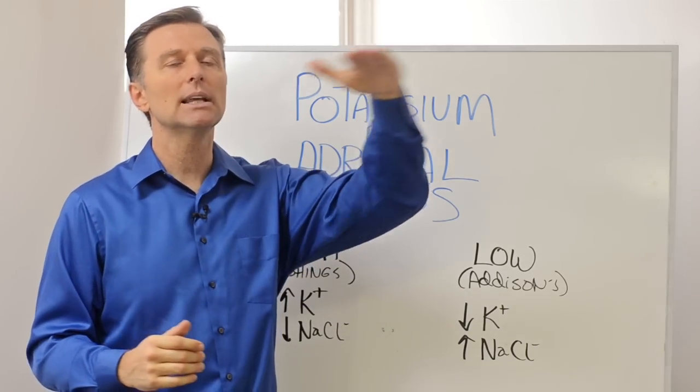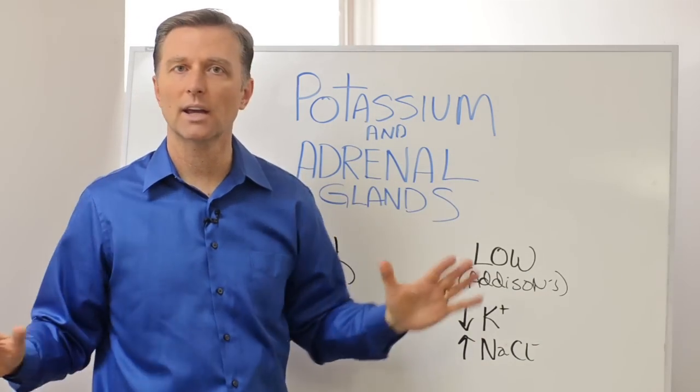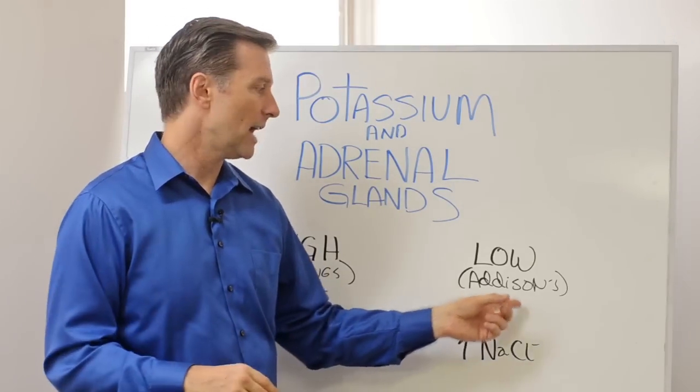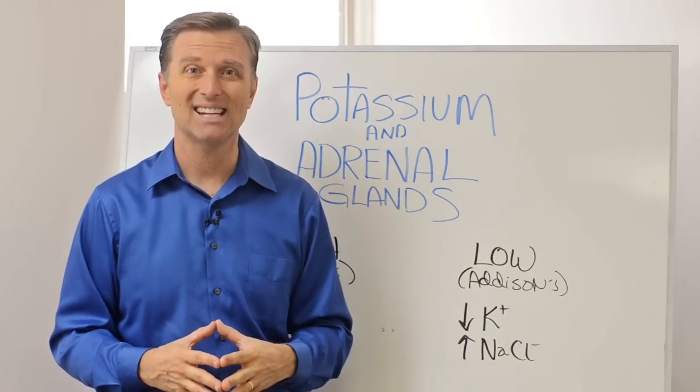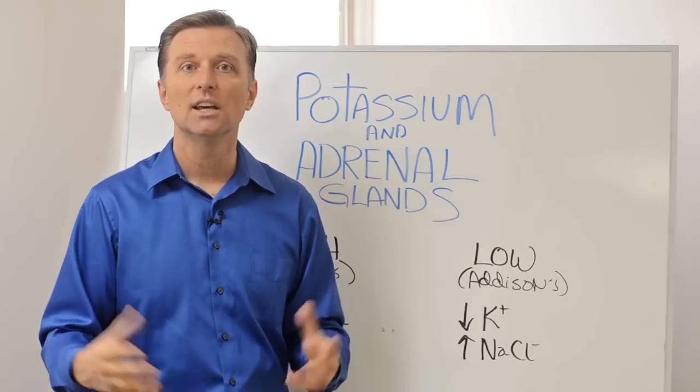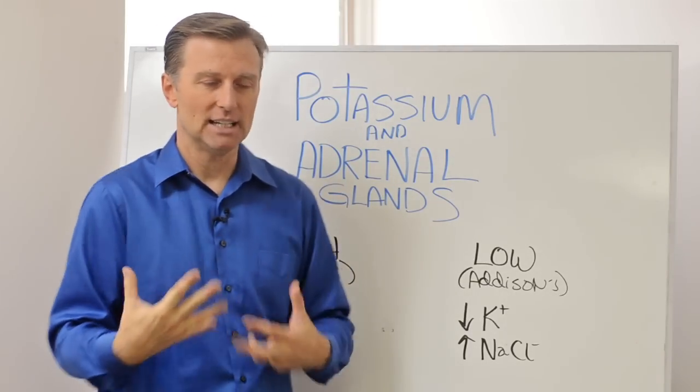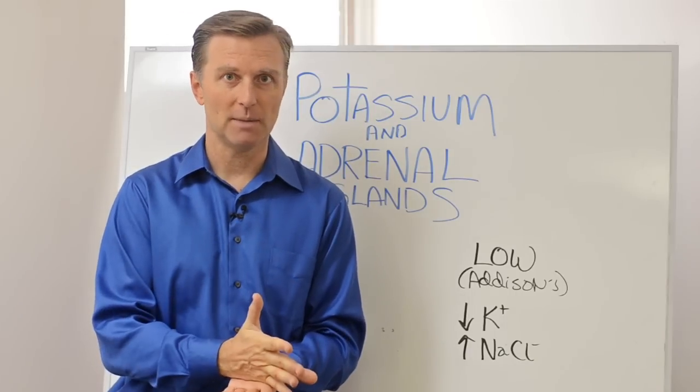Then when that state becomes completely burnt out and nothing is working anymore, adrenal burnout, that's called Addison's. John F. Kennedy had Addison's. You get a lot of inflammation. You actually lose weight. You get pigment colors. You actually get a tan. Your immune system is really bad, but you're burnt out.